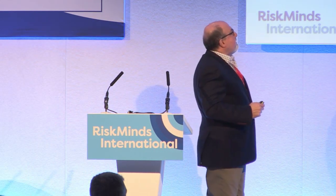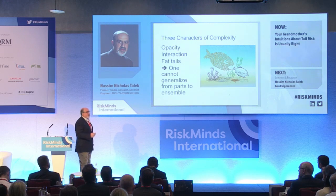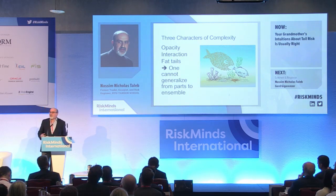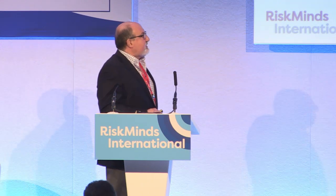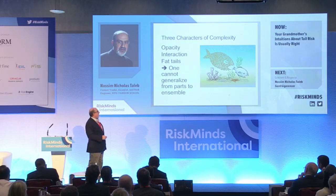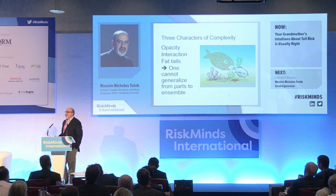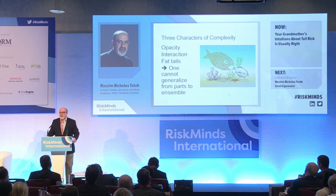The characteristics of complexity are: first, opacity — you don't see what's going on in the system; second, interaction between components — this is quite central; and third, fat tails — the rare event dominates the properties. When we look at interaction, you realize you cannot generalize to a school of fish from the observation of a single fish. This has pretty much sunk behavioral economics.